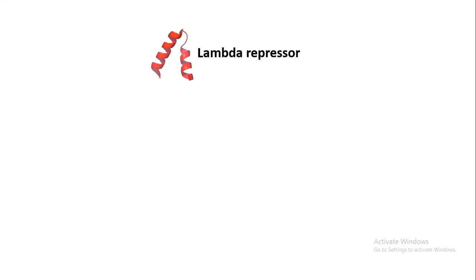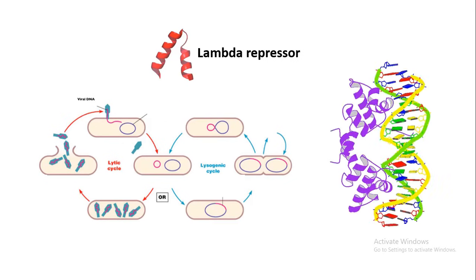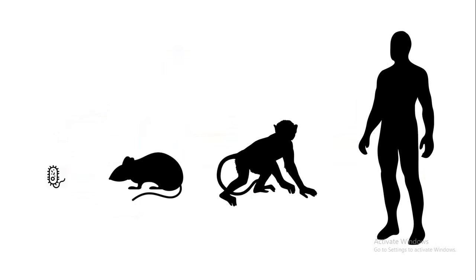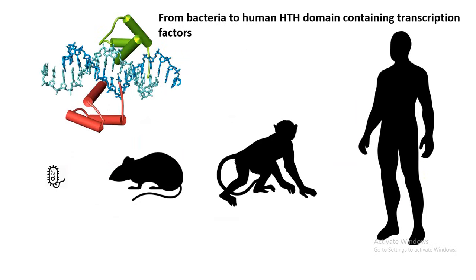The lambda repressor, which is important for the lytic-lysogenic switch in bacteriophage, also has the same DNA binding motif — the HTH motif. That is why the HTH motif's function is pretty much conserved from bacteria to humans.